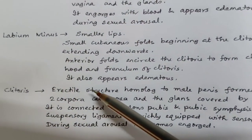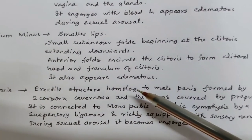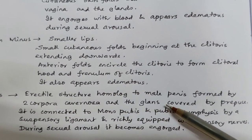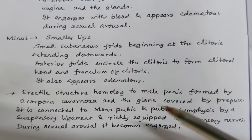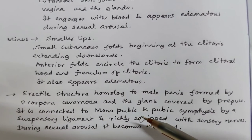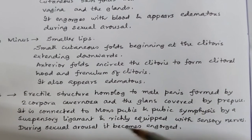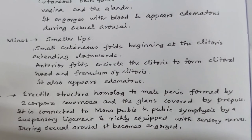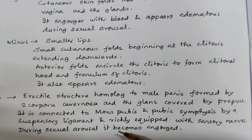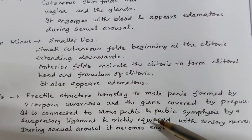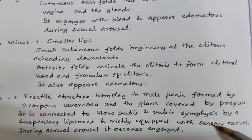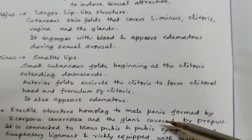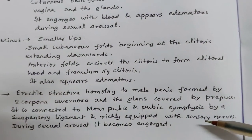The clitoris is an erectile structure homologous to the male penis, formed by two corpora cavernosa and the glans covered by the prepuce. It is connected to the Mons pubis and pubic symphysis by a suspensory ligament and is richly equipped with sensory nerves. During sexual arousal it becomes engorged — it is a highly erectile structure.